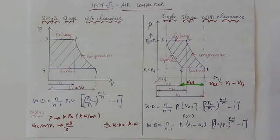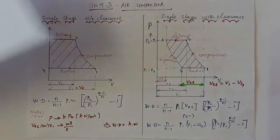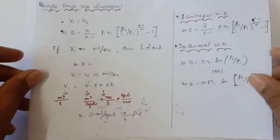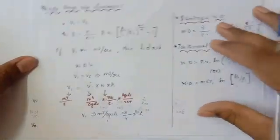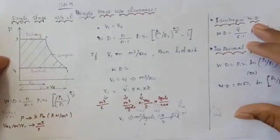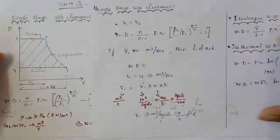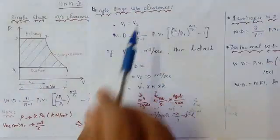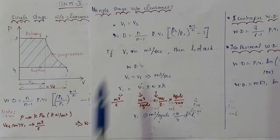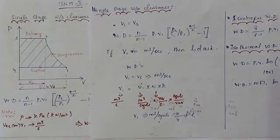Now, without clearance problems. For without clearance, I already told you. Without clearance, V1 equals Vs (stroke volume). There are two cases: one involves volume directly, and the other involves cylinder dimensions.